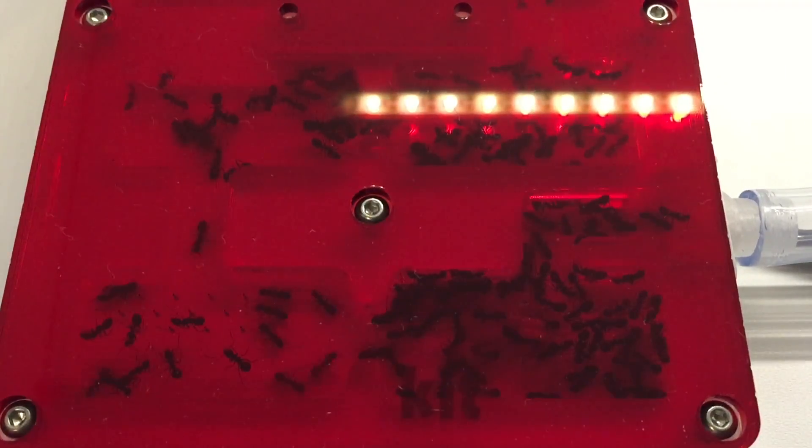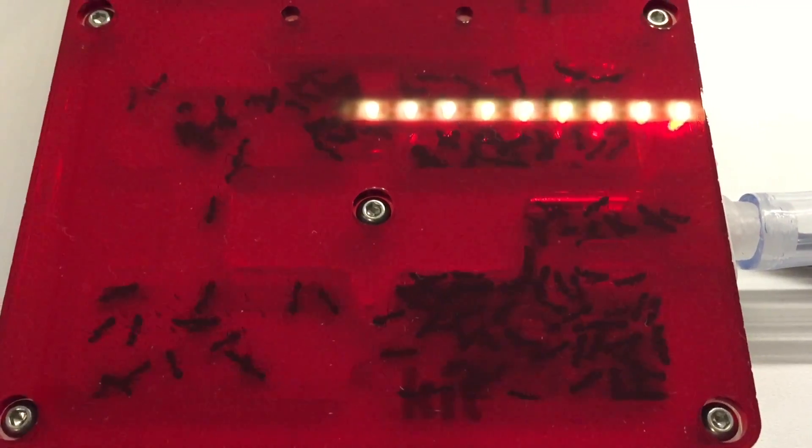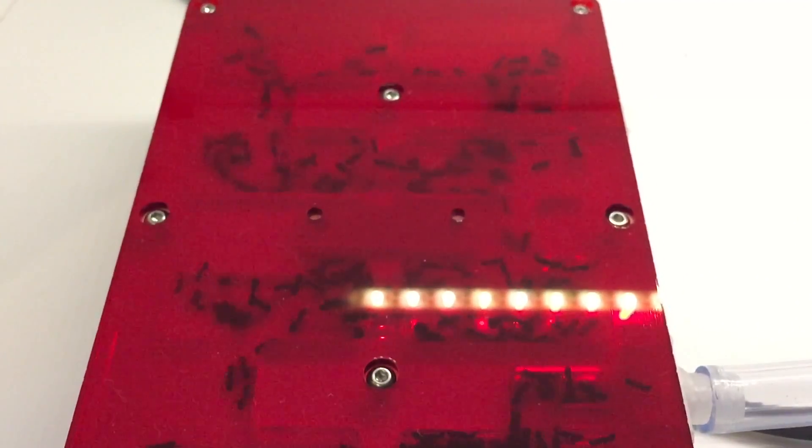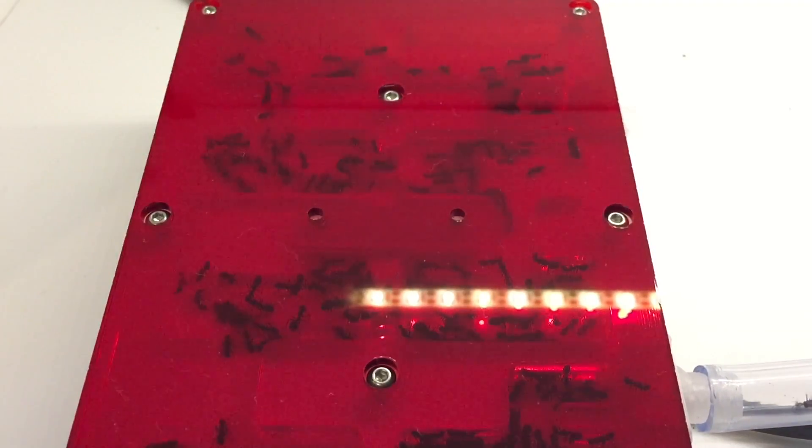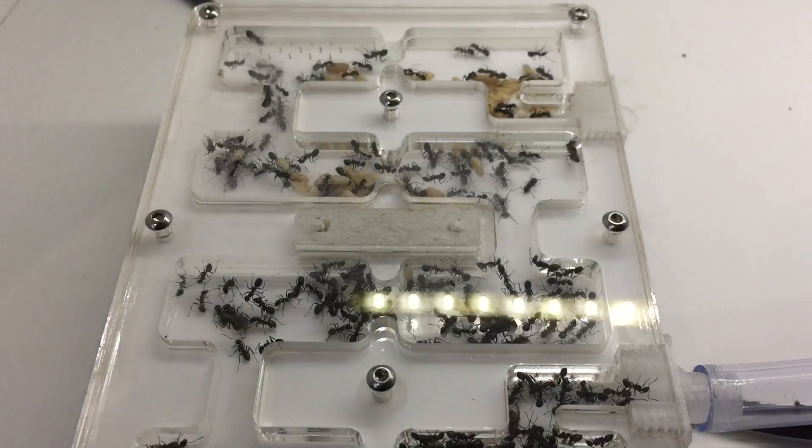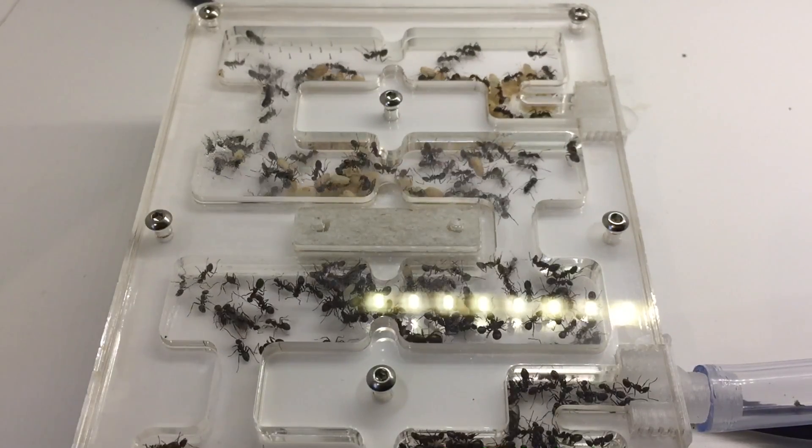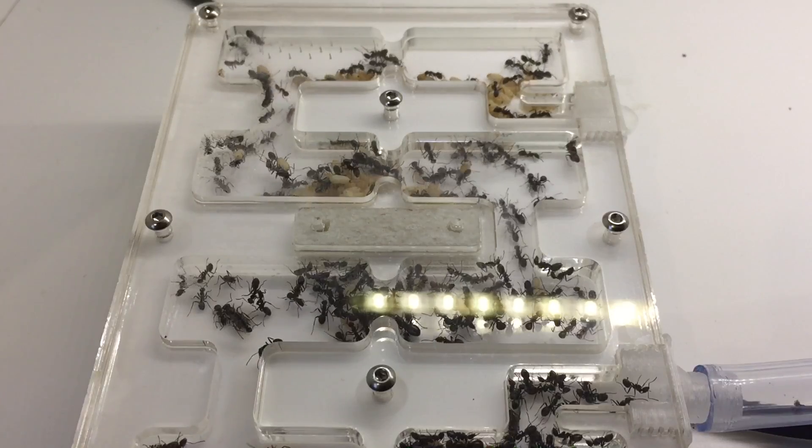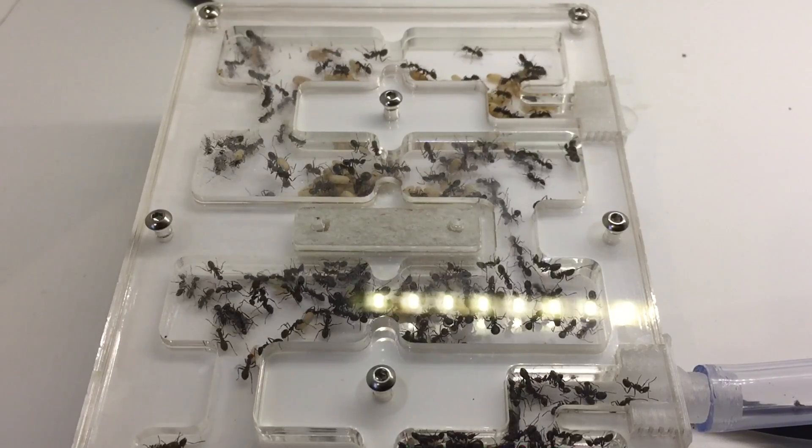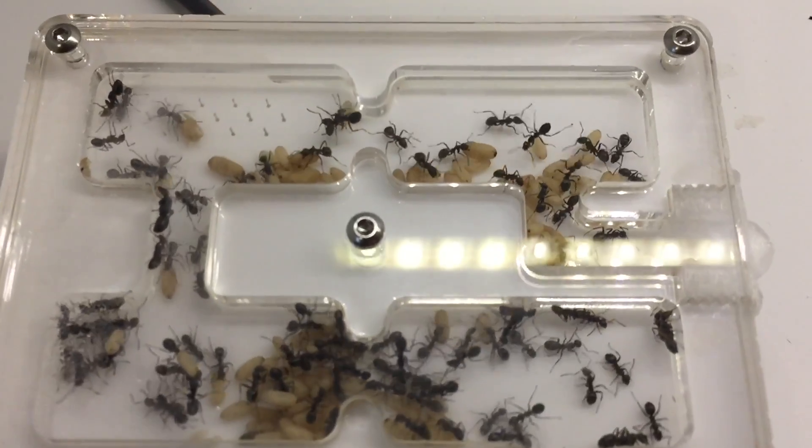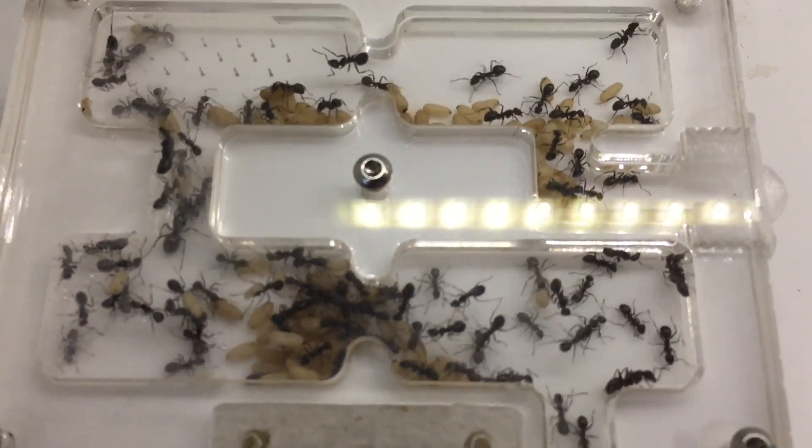Once the ants had fully moved into their new eight-chamber Ant Kit nest made out of acrylic with a red acrylic overlay which is removable, they for quite a long time were trying to decide where they wanted to put their brood and larvae and that sort of thing. Eventually they settled on the middle two rows.